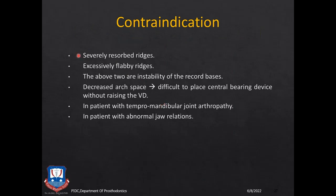The contraindications include: severely resorbed ridges where the record bases will be unstable and proper tracing will not be obtained; excessively flabby and hyperplastic ridges; decreased vertical dimension of occlusion and vertical dimension at rest; and patients with existing temporomandibular joint arthropathy or disorder, or patients with restricted TMJ movements — in such cases graphic tracing methods cannot be used.